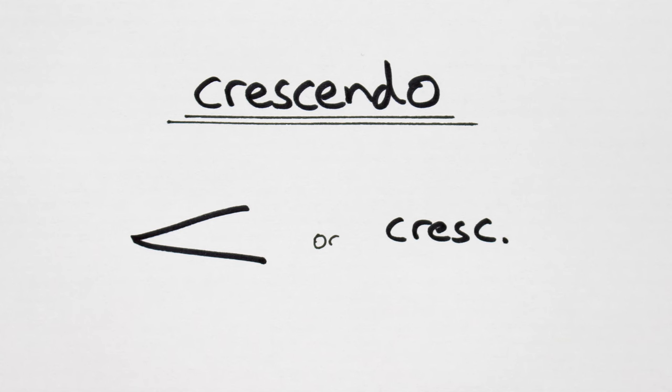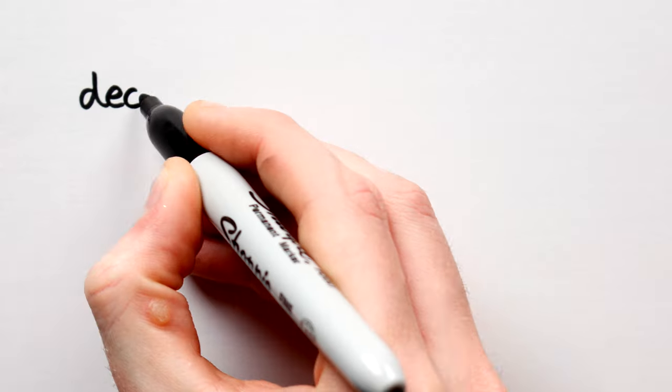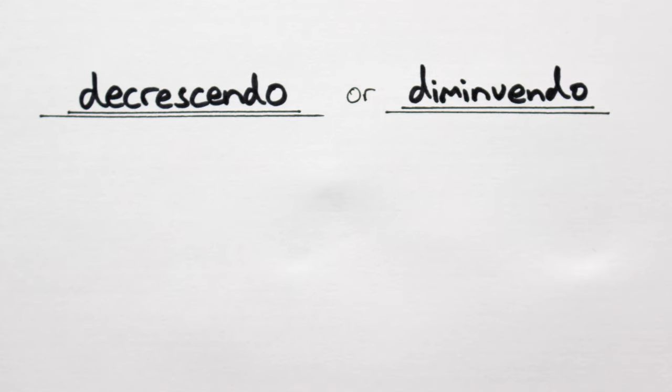And the gradual decrease in volume over time is called a decrescendo or diminuendo, notated like this or this.